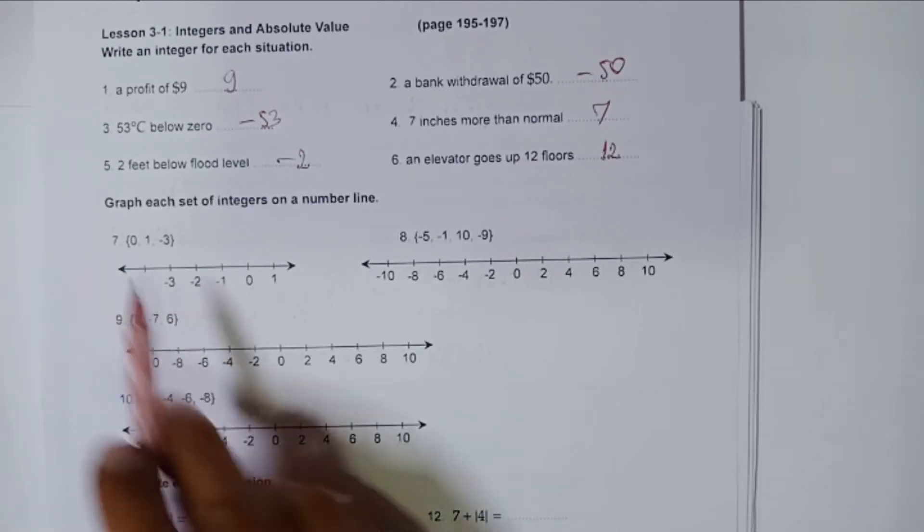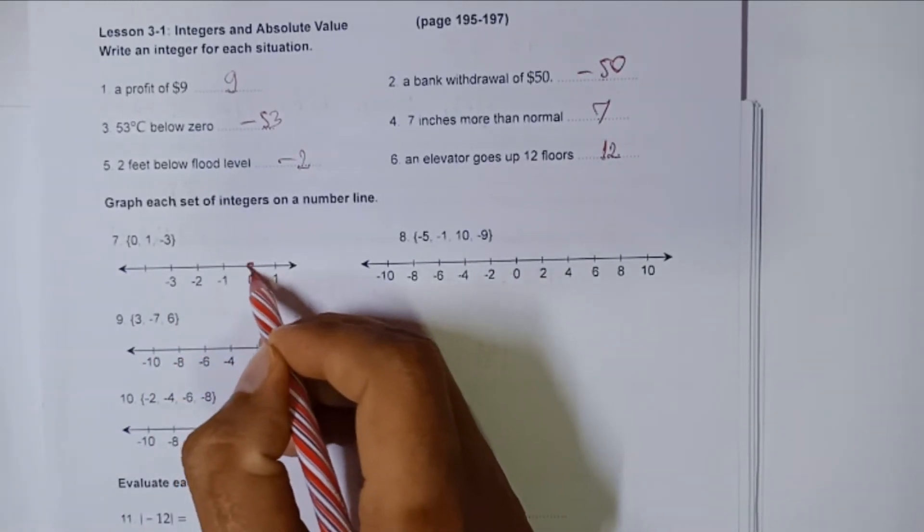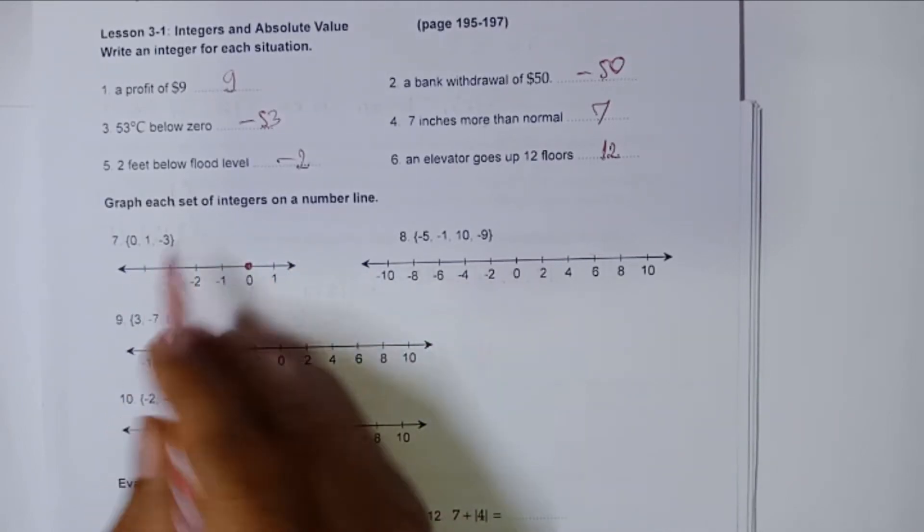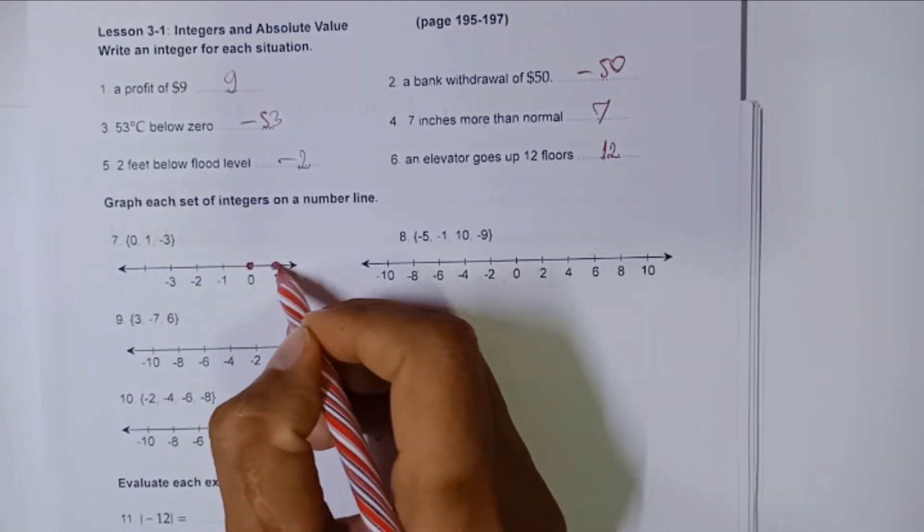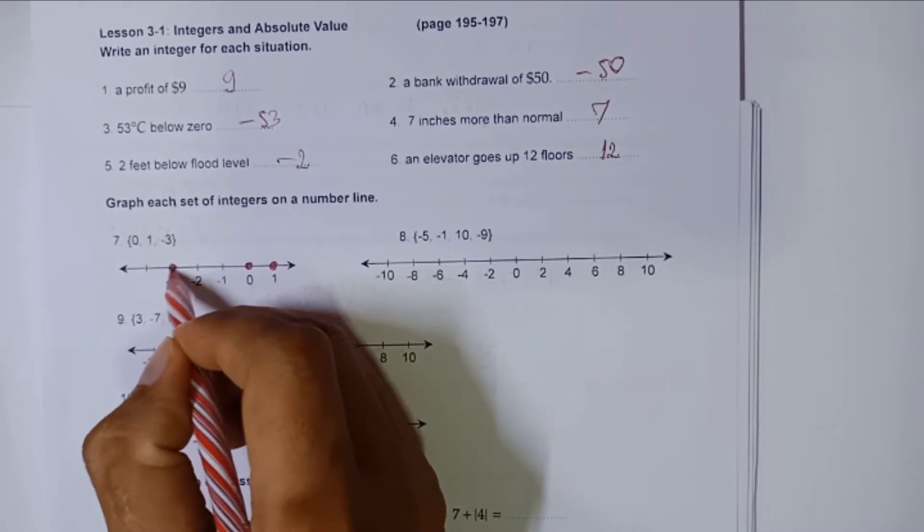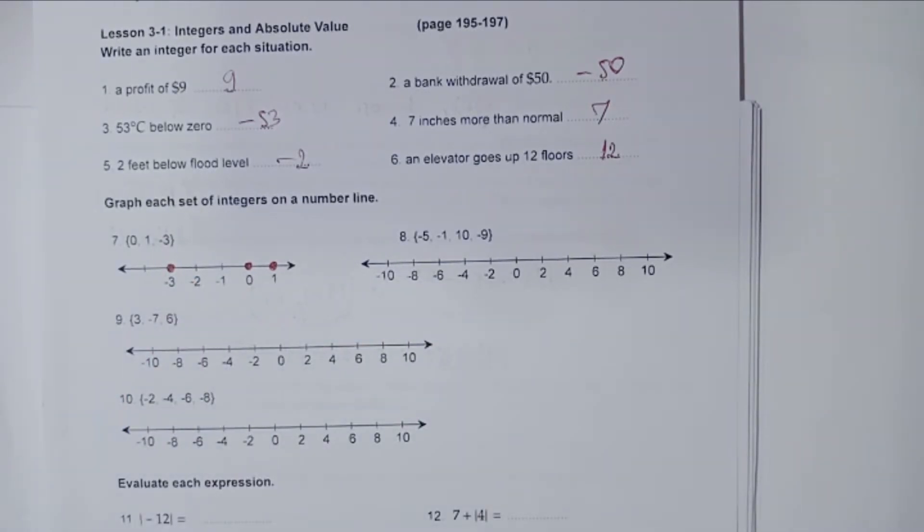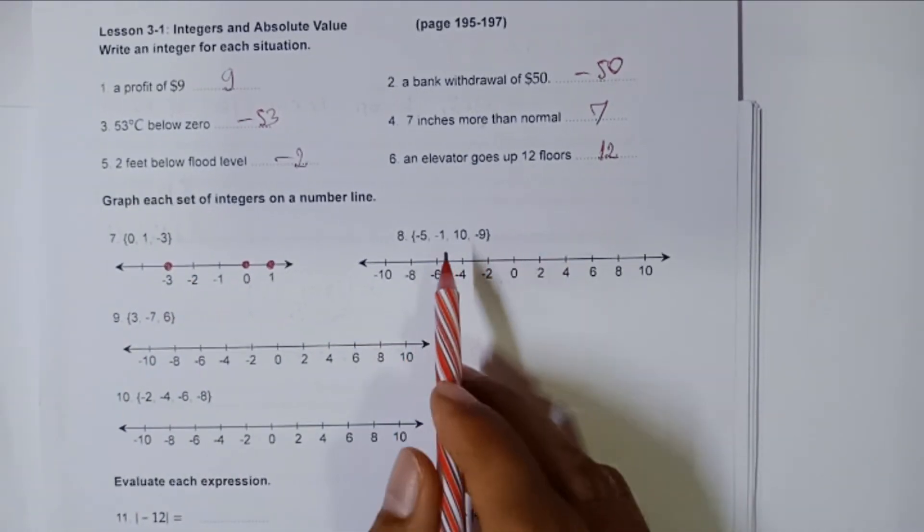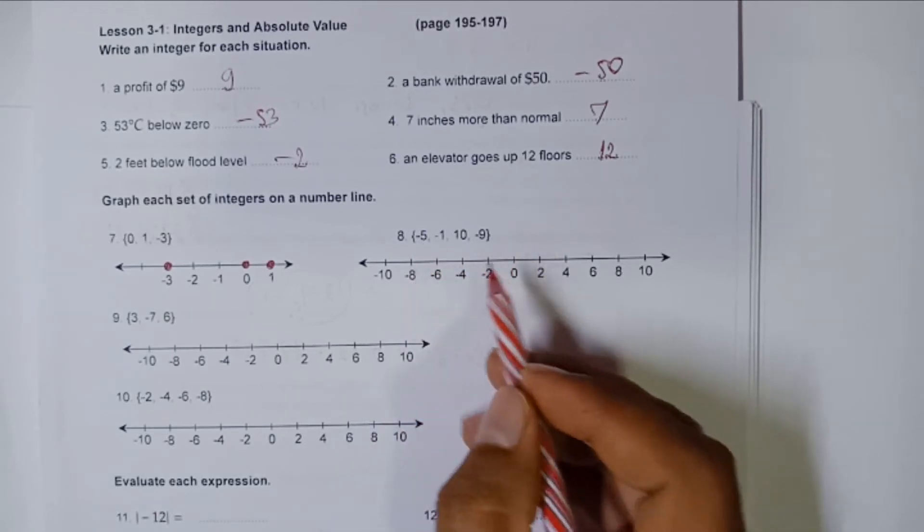So zero is this one, just place a dot right here on zero and one, place a dot on one as well. And negative three. This is as simple as that. This one, negative five.